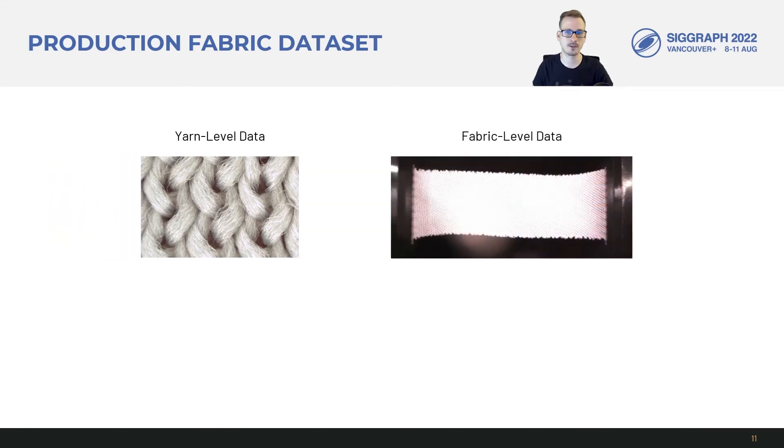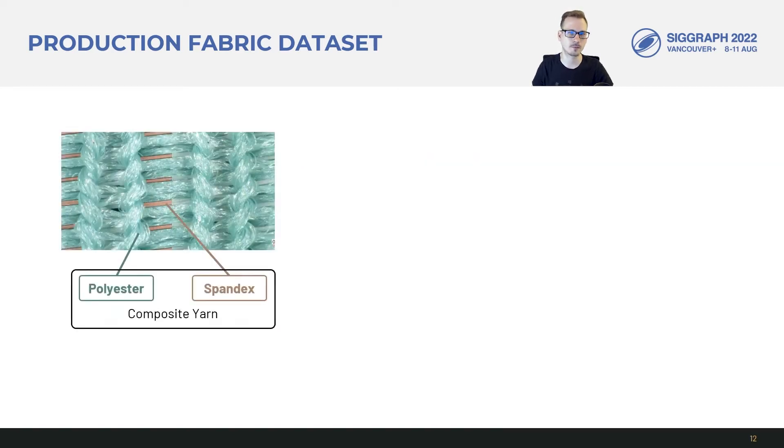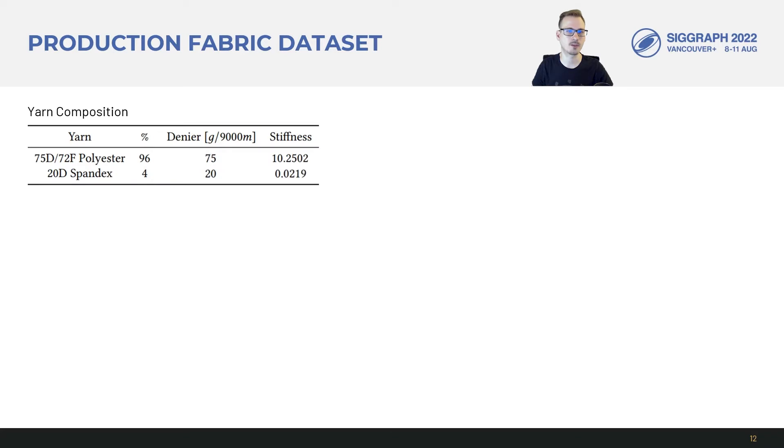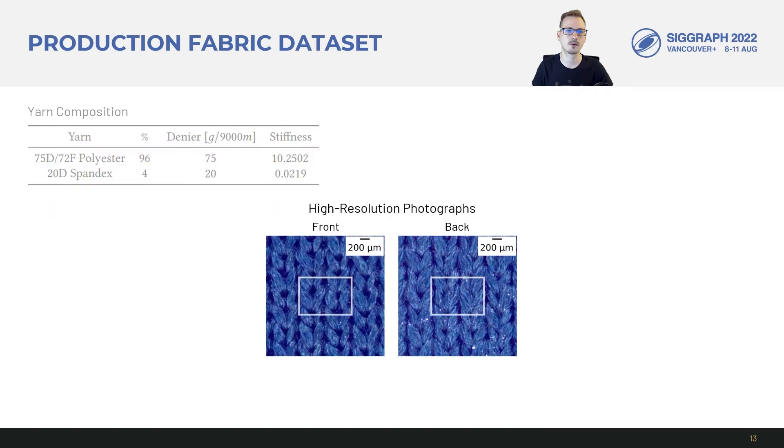Our solution to address these issues is to provide both yarn-level and fabric-level data. So next, we'll look at some of the data that we gathered for each of our fabric. To start with, since we have plated fabrics using combinations of multiple yarns, we have data on the yarn composition. This includes the respective mass percentages, densities, and stiffnesses.